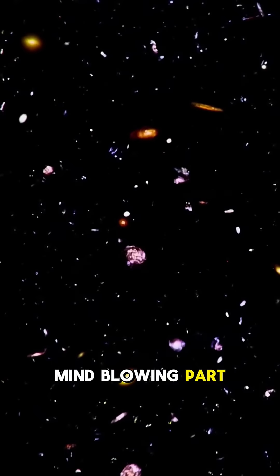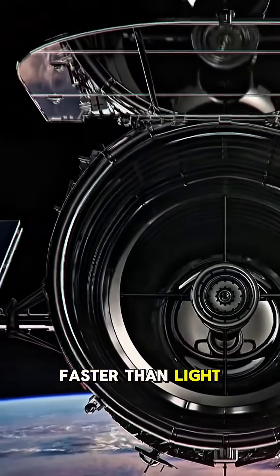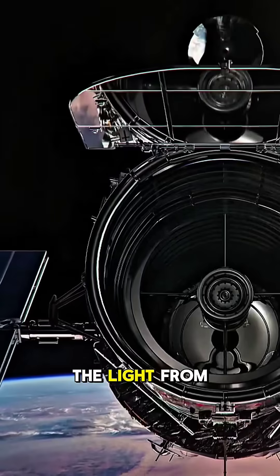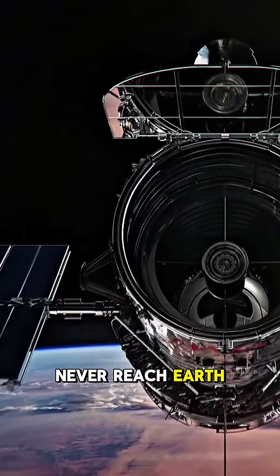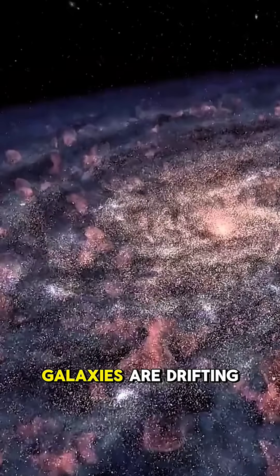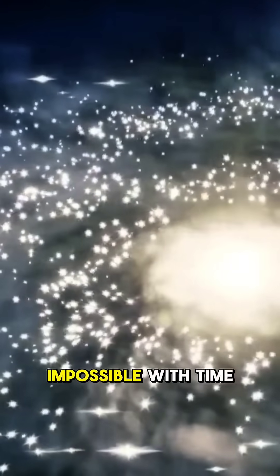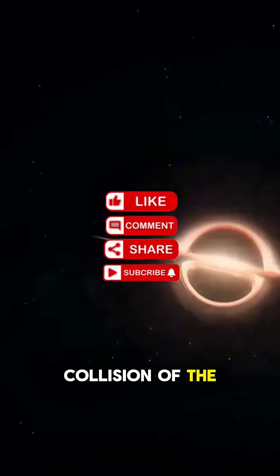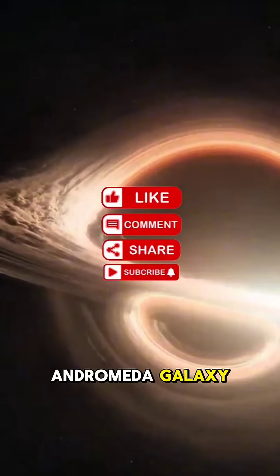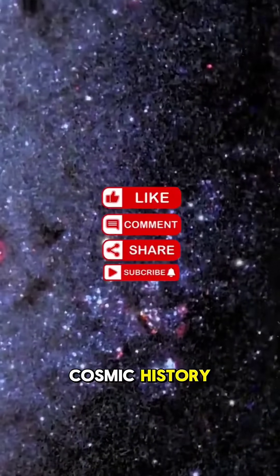But here's the mind-blowing part. 98% of them are forever out of reach. Due to the faster-than-light expansion of space, the light from most galaxies will never reach Earth. What we see today through telescopes like Hubble and Webb is actually the ancient past of the universe. The current state of the cosmos is far more isolated. Galaxies are drifting apart and intergalactic communication is becoming more impossible with time. Even the future collision of the Milky Way and Andromeda galaxy, which will happen in about 3.7 billion years, is just a tiny moment in cosmic history. It won't stop the universe from expanding or galaxies from becoming more isolated.